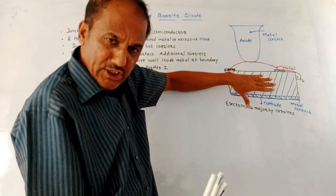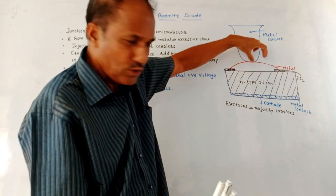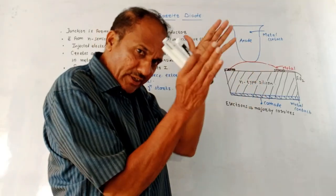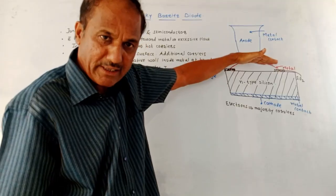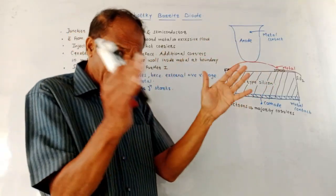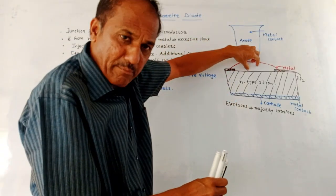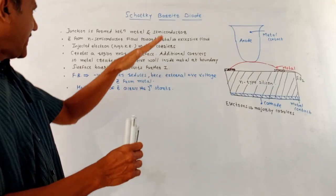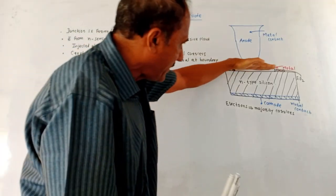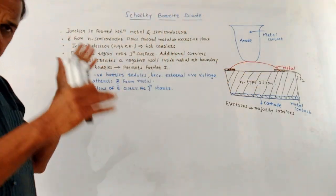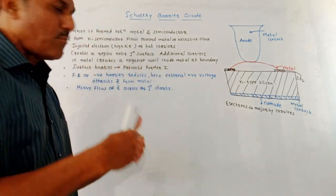Electrons start moving from N-type silicon towards the metal. In the metal, there are already certain electrons. So excessive flow of electrons from N-type semiconductor to the metal takes place when the junction is formed. After some time, the electrons present in the metal create a negative wall inside the metal at the boundary. This is called the surface barrier, and it prevents the further motion of current.